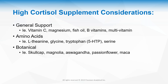High cortisol supplementation considerations: general support includes vitamin C (a great antioxidant also used by the adrenal gland), magnesium, fish oil, B vitamins especially B5, and a multivitamin. Calming amino acids include L-theanine, glycine, tryptophan, or 5-HTP, and serine. Botanically, Skullcap and Magnolia both inhibit 11-beta-HSD1 to push the body toward cortisone. Ashwagandha, Passionflower — research shows it may be as effective as alprazolam — and Maca can decrease ACTH and therefore cortisol; Maca is a good adaptogen in general.